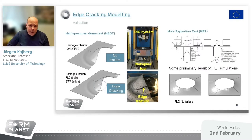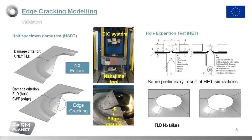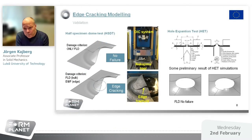When the model is calibrated, you need some kind of validation. Here we have two well-known tests: the hemispherical dome test and the hole expansion test. In both cases, you can see a comparison between using only standard forming limit diagrams and combining the forming limit diagrams with this calibrated damage model. For the dome test, without any damage criterion based on this EWF test, you won't have any failure. But there is a crack on the dome that you can capture if you use the damage model — you can see in the FE model results that a crack appears. This is exactly the same for the hole expansion test.